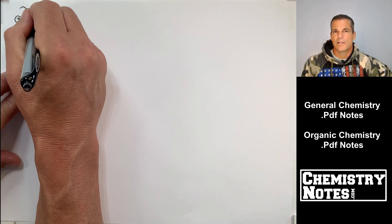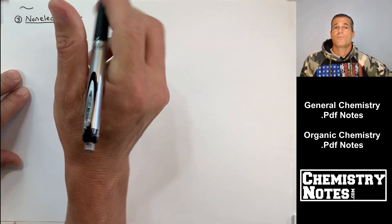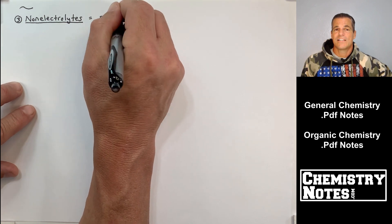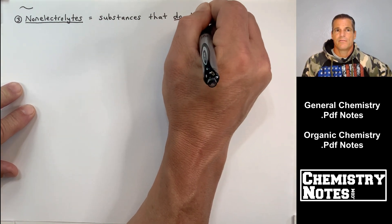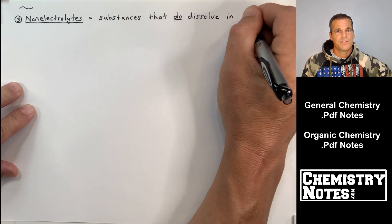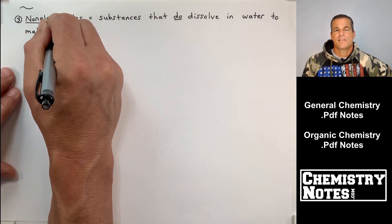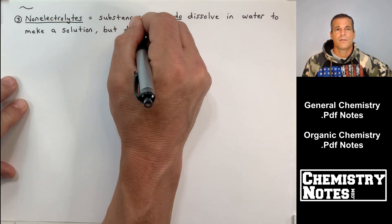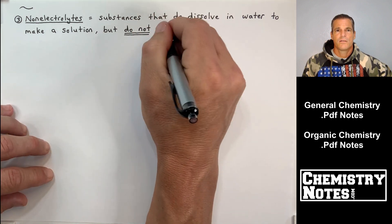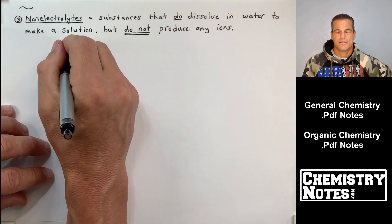All right. We've covered number one, strong electrolytes. We've covered number two, weak electrolytes. And third one, third class classification, are non-electrolytes. Now, that's not to say that these substances or these solutes don't dissolve. They do. So it says here, non-electrolytes are substances that they do dissolve in water to make a solution. But when they dissolve in water, they do not produce any ions. None.